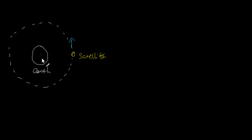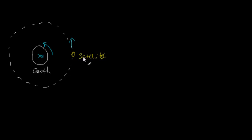We know that the earth rotates. Suppose that's the north pole and we are looking down from the top of the north pole — then the earth rotates this way. I'm going to look at a type of satellite which rotates around the earth with the same angular velocity as the earth.